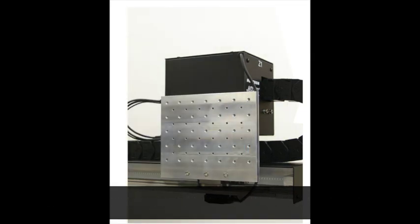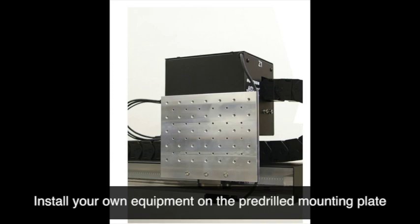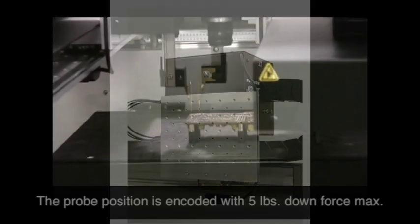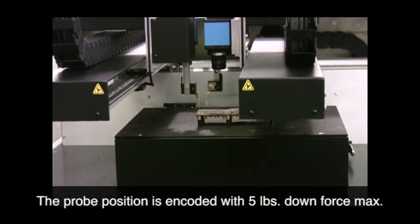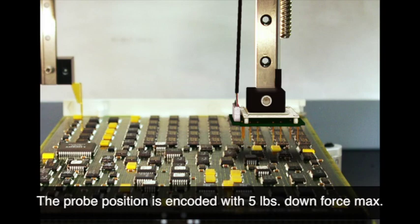With the camera and Z-axis heads removed, up to 15 pounds of custom equipment can be installed on the pre-drilled mounting plate. The standard Z-axis motors are encoded and have a potential downforce of up to 5 pounds that will easily compress a multiple spring probe array.